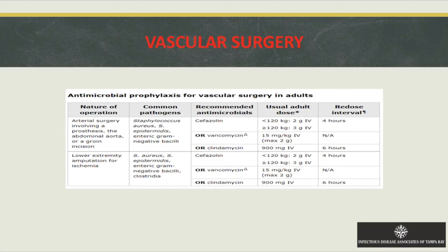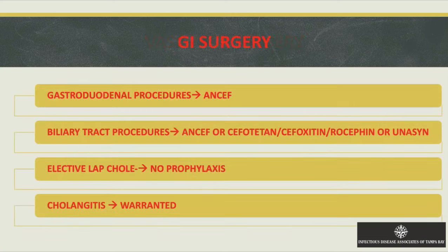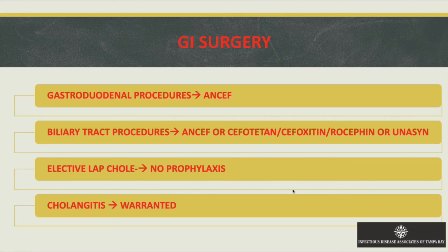For vascular surgery involving groin incisions or amputations, similar guidelines apply. For GI surgery, gastroduodenal procedures can use ANCEF alone. Biliary tract surgery warrants adding anaerobic coverage — options include cefotetan, cefoxitin, or Unasyn. You can also add Flagyl to ANCEF or use ceftriaxone and Flagyl. For cholangitis, use Unasyn or ceftriaxone plus Flagyl or ANCEF plus Flagyl.